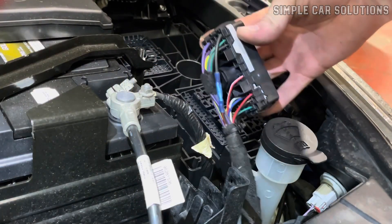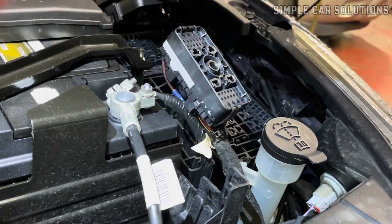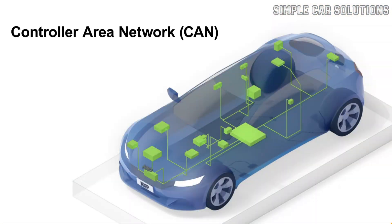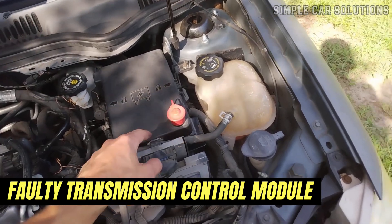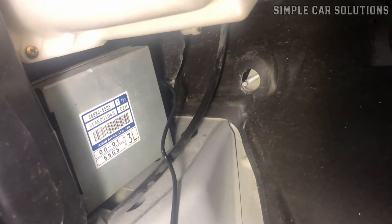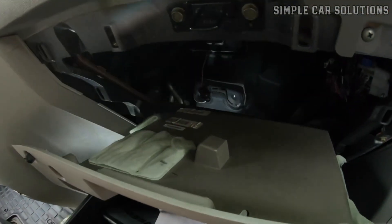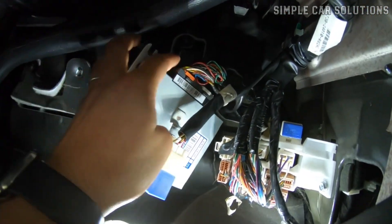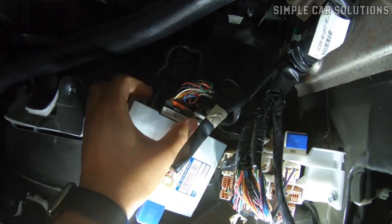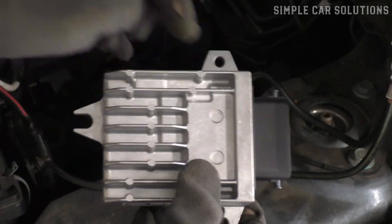This also includes checking the CAN bus wiring, the system that allows all the vehicle's modules to communicate. Any problem along this network can cause a loss of communication with the TCM. The issue could also be a faulty transmission control module itself. The TCM's location varies depending on the vehicle — it might be behind the glove box, inside the cabin, up in the engine compartment, or even inside the transmission. While TCM failures are less common and most problems tend to be wiring related, it's still possible that the module has failed and needs to be replaced.